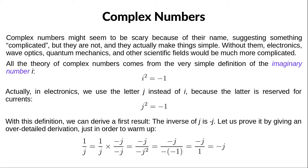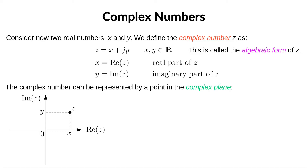For any two real numbers x and y, we can define the complex number z as being equal to x plus j times y. We say that x is the real part of z and y is the imaginary part of z. Be careful: the real part x is a real number, but the imaginary part y is also a real number. When a complex number is written as a real part plus j times an imaginary part, we say that it is written in the algebraic form.